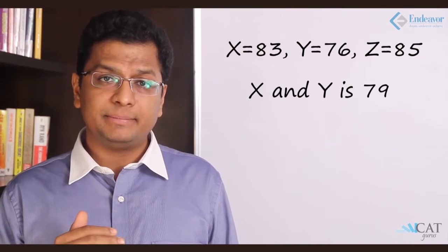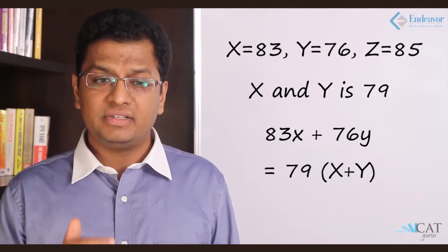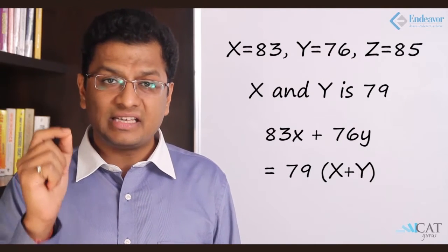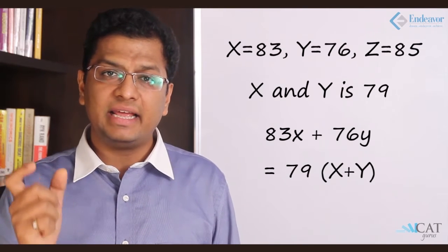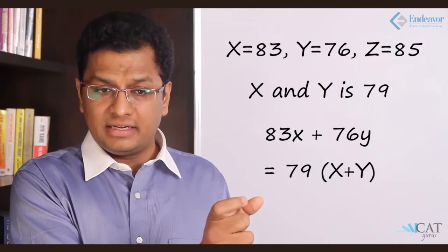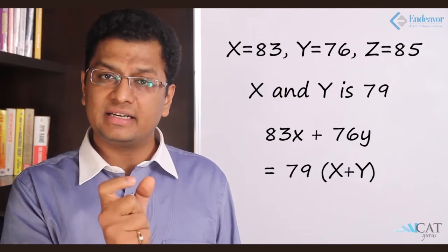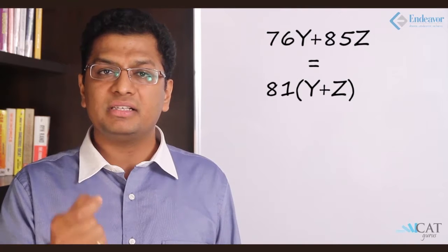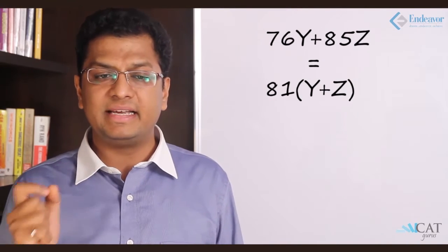Let us say x is the average of class X, which is 83, y is 76, and z is 85. X and Y together are 79. So 83x (83 multiplied by the strength of x) plus 76y equals 79(x+y). This is the total of the two classes: 83x is the total score of class X, 76y is the total score of the second class, and 79(x+y) is the total score of both classes together. We get the ratio x:y is 3:4. Similarly for Y and Z, 76y plus 85z equals 81(y+z), we get the ratio y:z equal to 4:5.